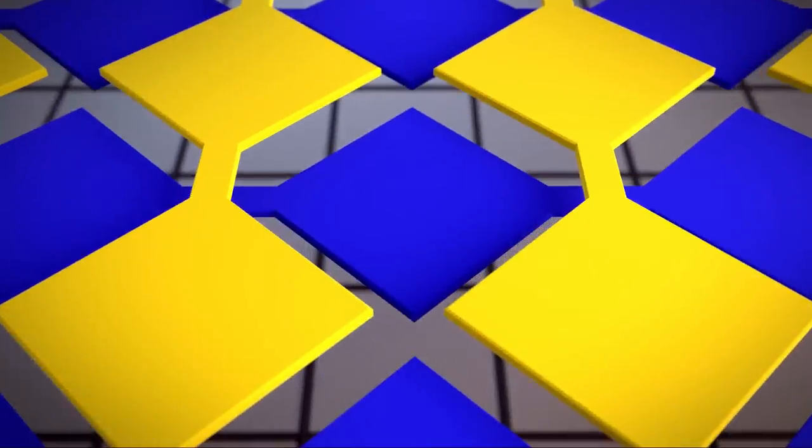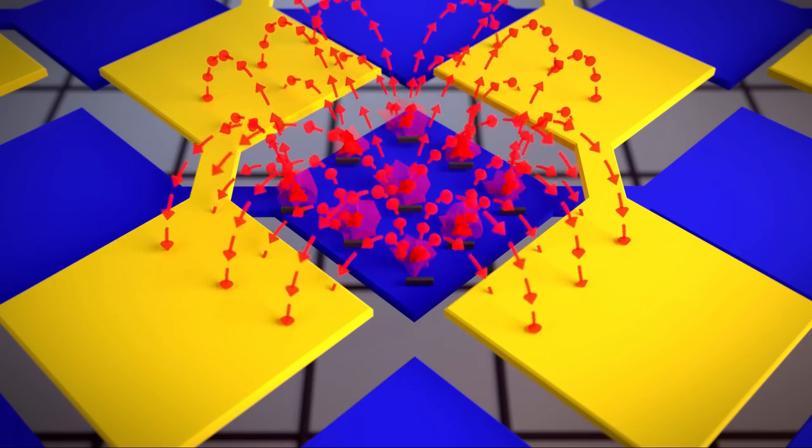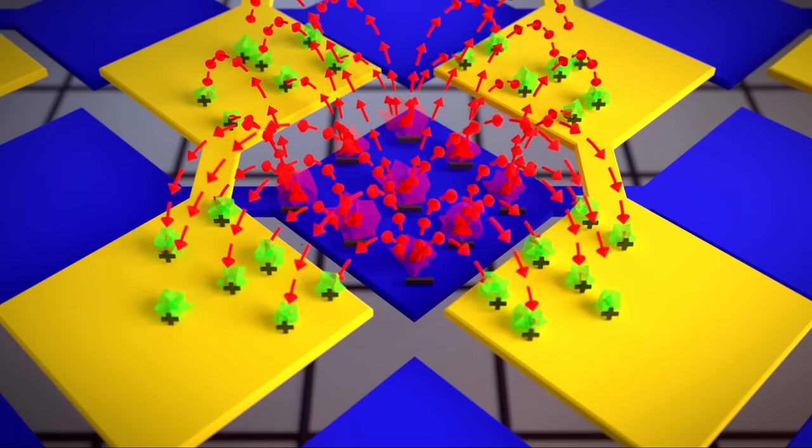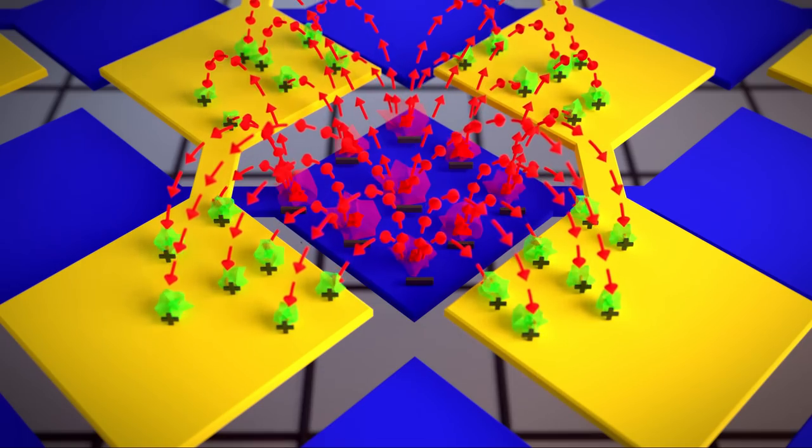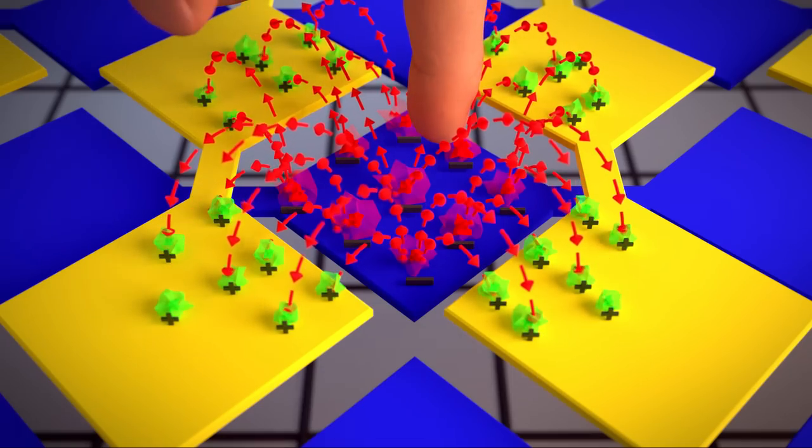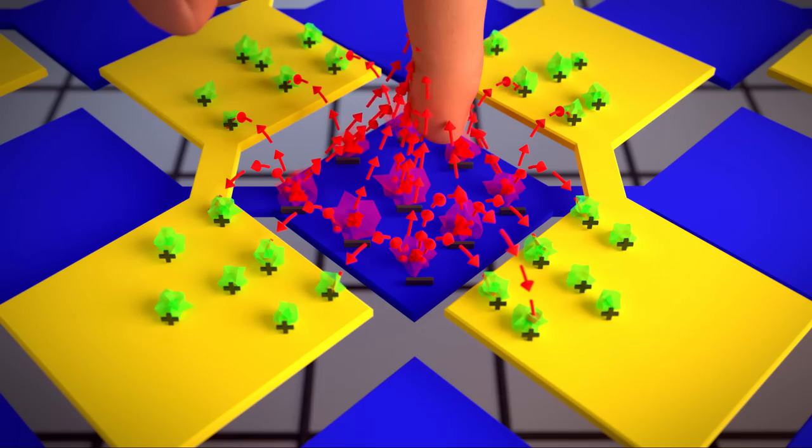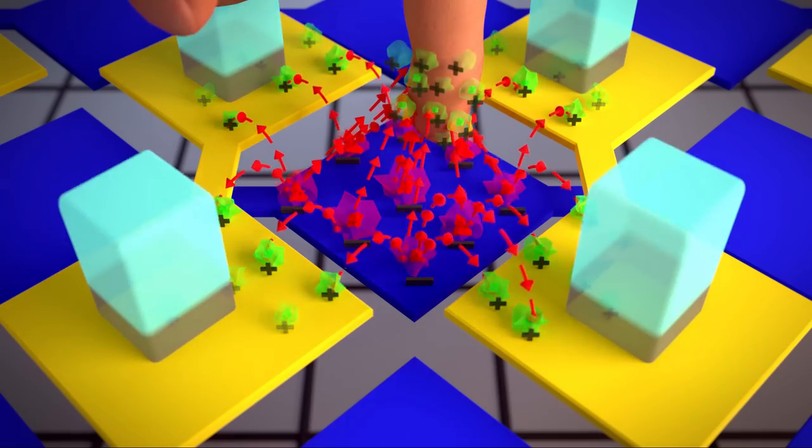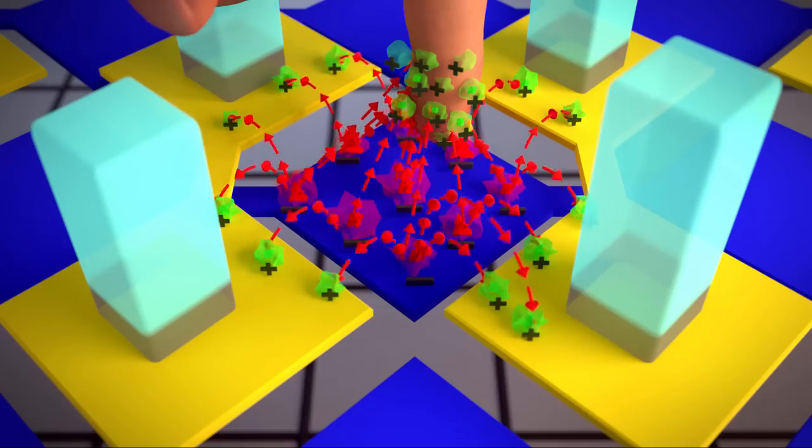Let's quickly review how the screen detects a touch at one intersection. Electrons with a negative charge are applied to the blue plate, which builds an electric field and causes positive charges to gather on the yellow plate. When a conductive material like your fingertip comes close, it interrupts the electric field, and the change in positive charge on the yellow plate is measured.